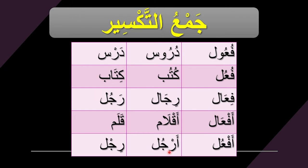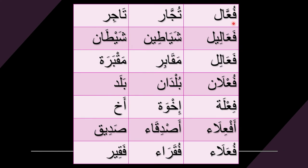Another pattern: arjul, meaning legs, comes from rijl. We also have other patterns, such as tujjar, meaning traders, which comes from tajir, meaning a trader. Another example: shayateen, meaning devils, comes from shaitan, meaning a devil.